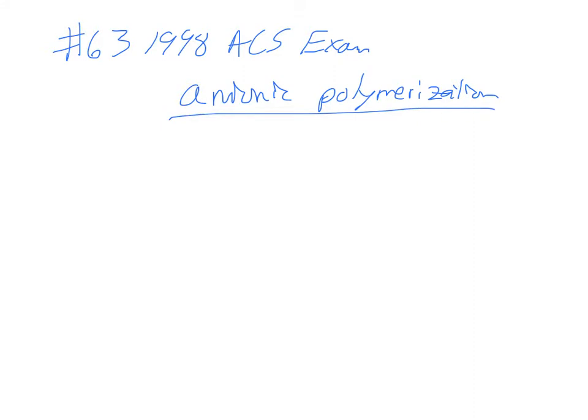I'm going to revisit number 63 from the 1998 ACS exam. Basically saying what's going on with an anionic polymerization. So an anionic polymerization, that means anionic - it's going to be negative charges, and polymerization means a lot of these monomers are going to come together. So we need to start with a negative charge. A lot of times polymerizations are started with an initiator. We'd have to have an initiator with a negative charge to get this started. We can't create charge.